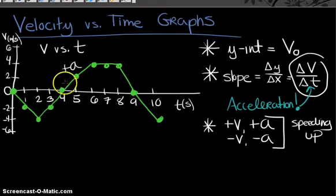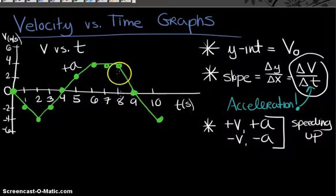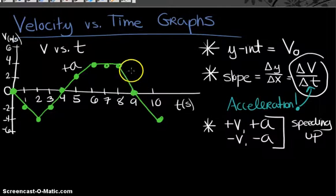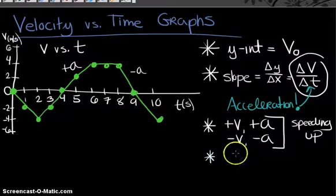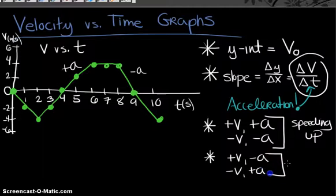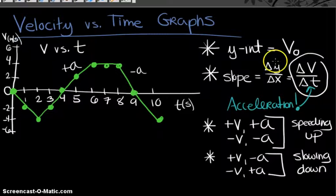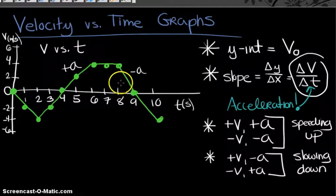From eight to nine seconds, velocity values are positive but the slope is negative, so acceleration is negative. When velocity and acceleration have opposite signs, you have slowing down motion. The key ideas are: positive v, negative a — or negative v, positive a — when the signs are different, the object is slowing down. Knowing the slope tells us whether acceleration is positive or negative.